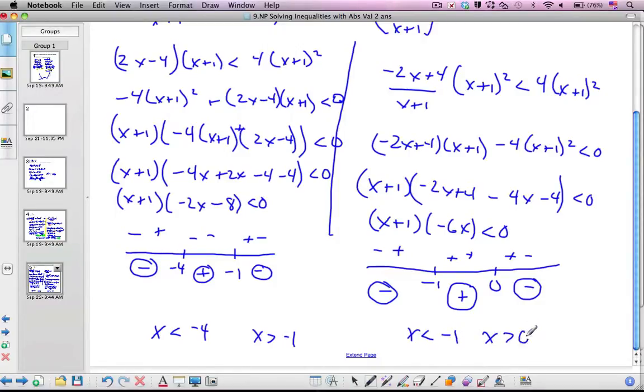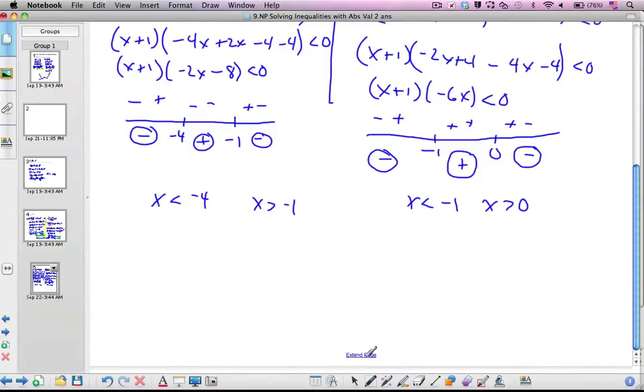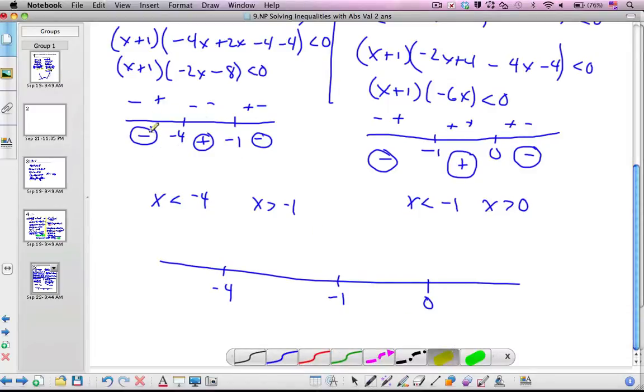If I think about this, I've got some conflicting information here. Let's make one great big number line. Here's negative 1. Here's a 0. And here is negative 4. And if I consider, we'll make this the yellow. This says here, this way. And here.